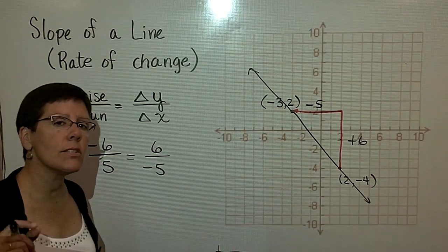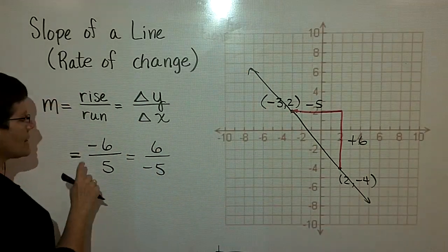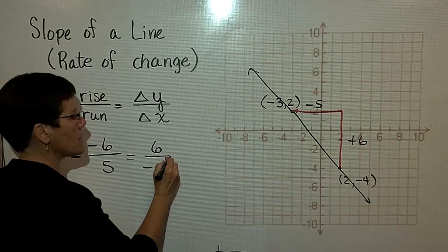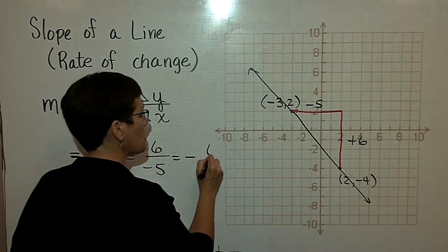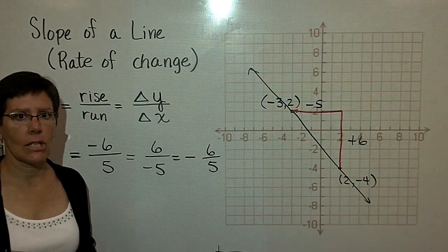So the slope of that line would have been a positive 6 over a negative 5. And so the bottom line is, I just need you to see that this is a negatively sloping line, and that my sign can be in the numerator or in the denominator, or sometimes we'll just put that sign in front of that fraction. That means that I've got a negative slope.